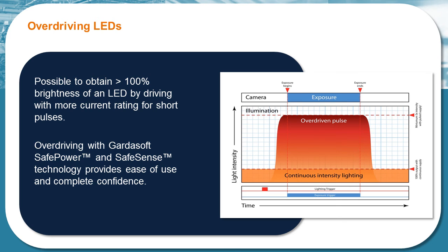Most area scan systems can benefit from overdriving. However, line scan systems normally can't as they usually need continuous lighting.